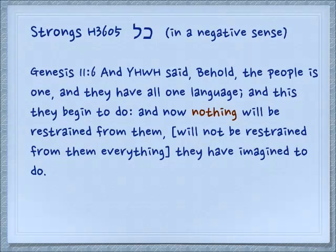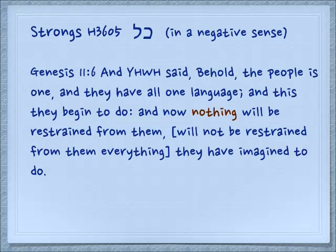In another similar negative sense, Genesis 11:6: 'And Yehovah said, behold the people is one and they have one language and this they begin to do. Now nothing will be restrained from them.' Literally in Hebrew: will not be restrained from them — everything. So it's kol, but in English we say nothing will be restrained from them — nothing that they have imagined to do. Talking of course about Babel.